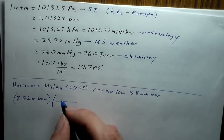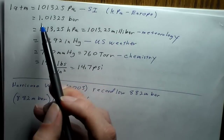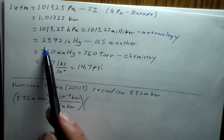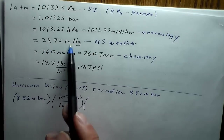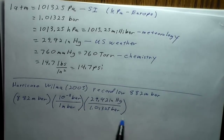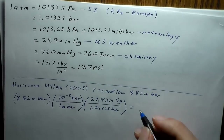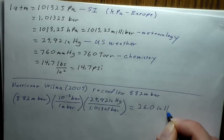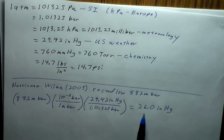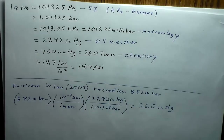Then convert to inches of mercury using the conversion 1.01325 bar per atmosphere and 29.92 inches of mercury per atmosphere. The millibars and bars cancel, and we get 26.0 inches of mercury. That means a barometer inside that hurricane would decrease by nearly 4 inches — a pretty significant drop.